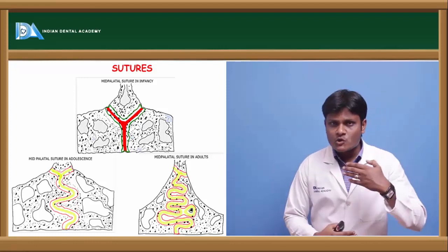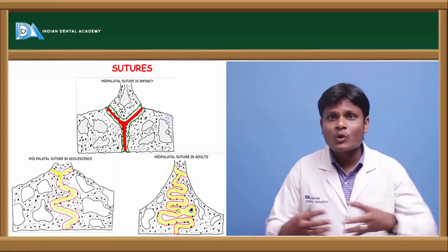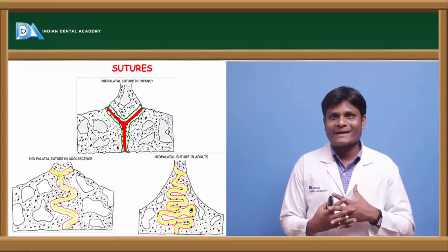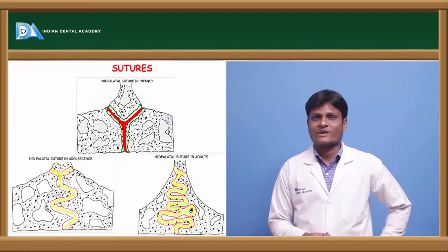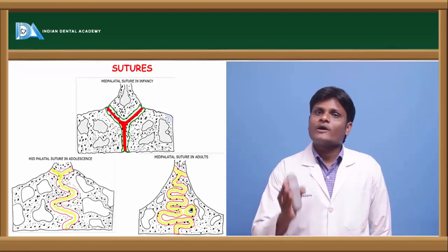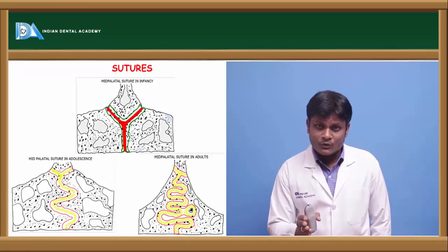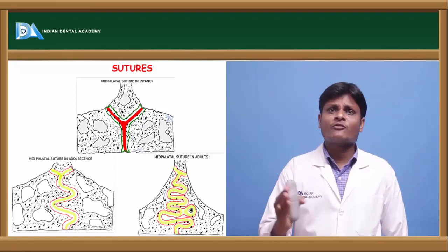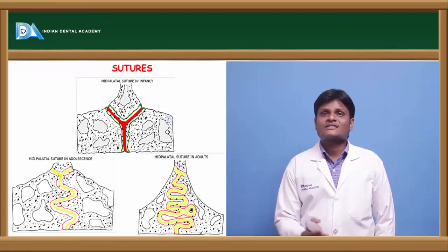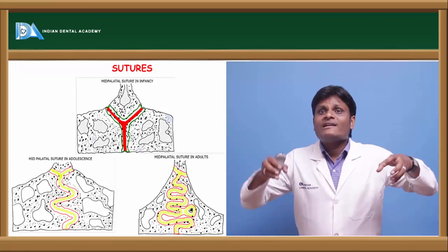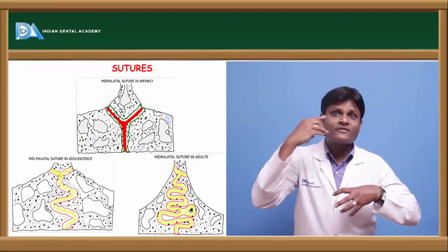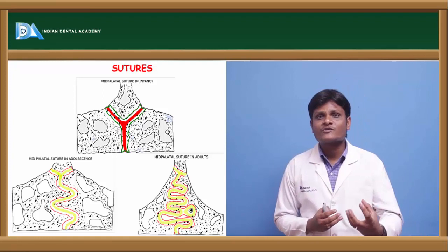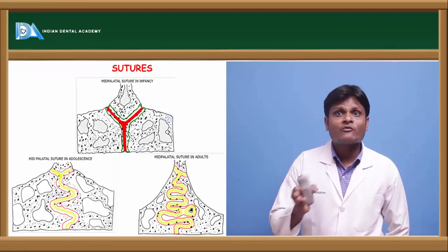As the age of the individual advances, the sutures become more and more ossified with more and more serrations, leading to increased compactness which is very difficult to split by means of expansion. Keeping this clinical point in view, expansion should be carried out as early as possible — preferably during the growth period, before 15 years of age — so that you can successfully split the mid-palatal suture with less resistance from the circummaxillary sutures.